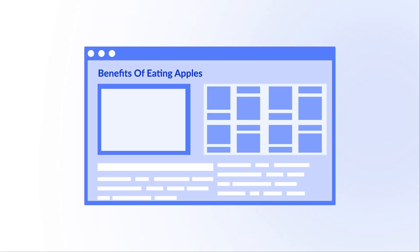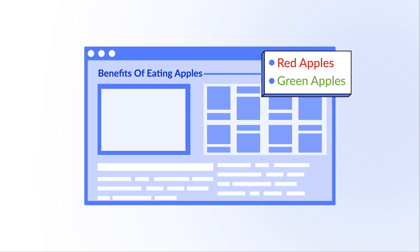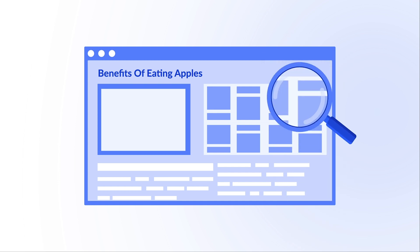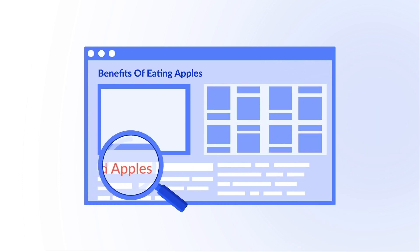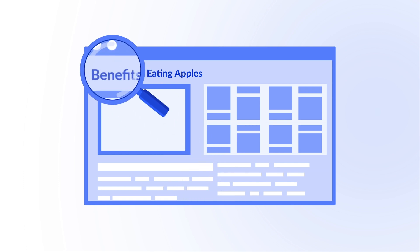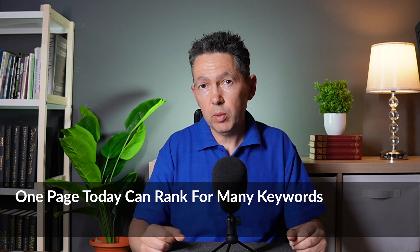Today, however, search engines are smarter. The algorithms have evolved to connect keywords that are related semantically or otherwise. If you were creating an article about the benefits of eating apples, red apples and green apples would be related keywords in the same group or cluster. You would create just one page that included information about both red and green apples and any other related keywords in your cluster. One page today can rank for many keywords — in fact, a well-optimized page can rank for hundreds of related terms. The potential for massive traffic is tremendous.